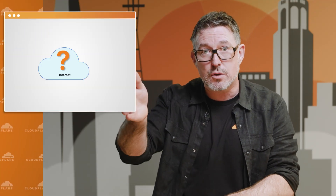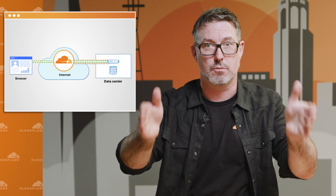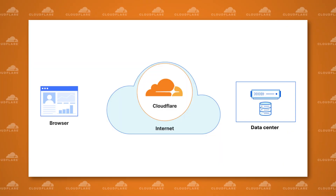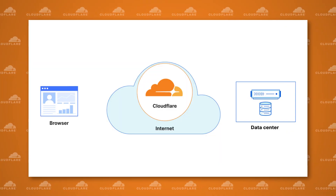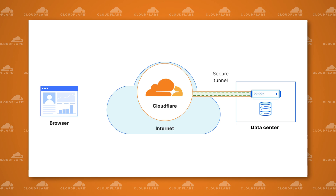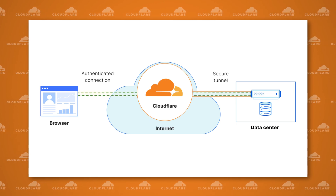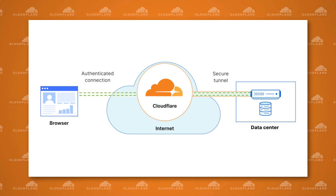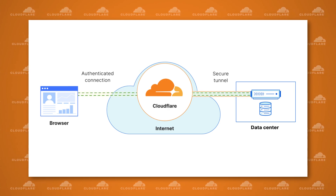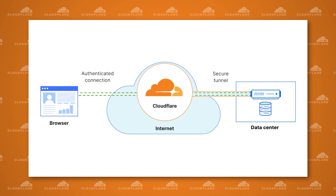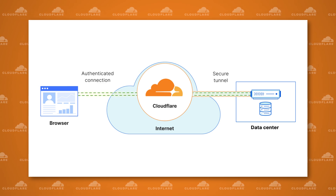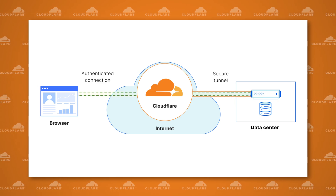The first objective is to create connectivity between the user's browser and the application. There are two parts to this: the connection from Cloudflare to the app, and the connection between the user and Cloudflare. Cloudflare is going to sit in the middle and apply security policies and use its vast network to protect the application and improve response times.